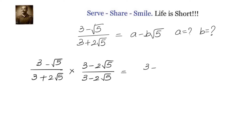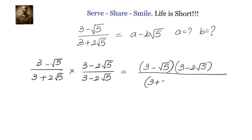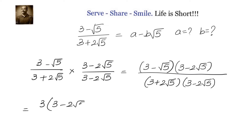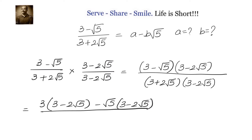In the numerator we will have 3 minus root 5 multiplied with 3 minus 2 root 5. In the denominator we will have 3 plus 2 root 5 into 3 minus 2 root 5. We can separate the numerator as 3 into 3 minus 2 root 5 minus root 5 into 3 minus 2 root 5.